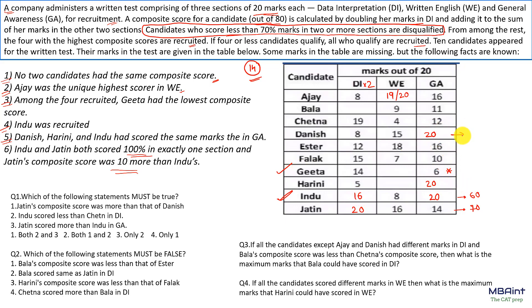Now let's find composite scores. Danish: 16 plus 15 equals 31, plus 20 GA equals 51. Easter: 12 doubled is 24, plus 16 plus 18 equals 58. Fallak will not qualify. Chetan will not qualify because scoring less than 14 in two sections. Chetan's composite score: 38 plus 4 plus 12 equals 54.